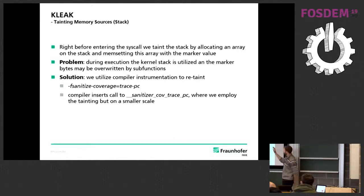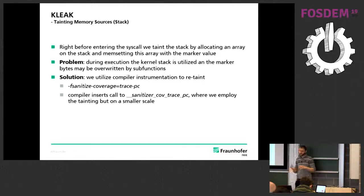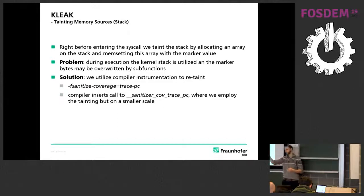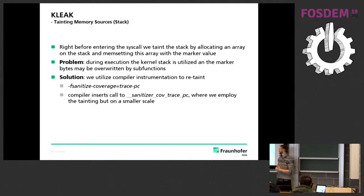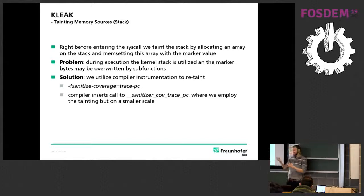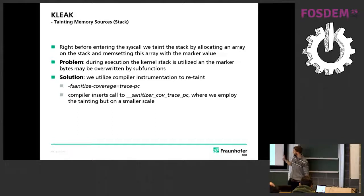Another data source is the stack. Right before entering the syscall, at syscall dispatching, we call our own function that taints the whole stack. But then we've got a problem: during execution of the syscall you enter into another function and another, those will open and close local stack frames, and the leak may be a little bit deeper in the syscall. So what we do is continuously retaint the stack — we use some compiler instrumentation and every now and then retaint a smaller part, currently 512 bytes. This increases our probability to encounter those tainted bytes later in copyout.